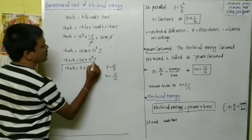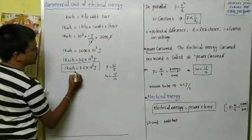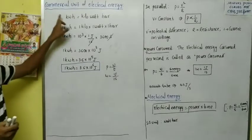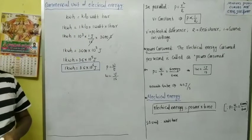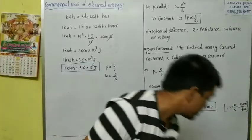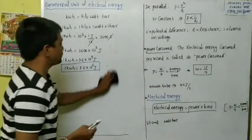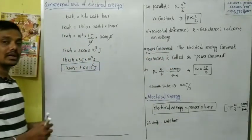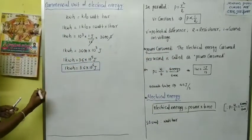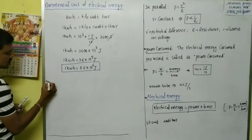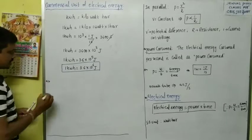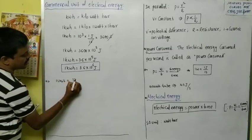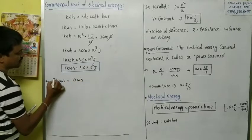One kilowatt hour equals 3.6 × 10⁶ joules. If one kilowatt hour of energy is consumed, then we say that equals one unit. One unit equals one kilowatt hour. You should remember this.